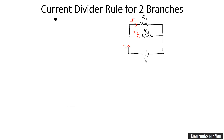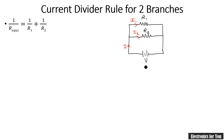Let us talk about the current divider rule for two branches. Here is the circuit: this is R1, this is R2, and the currents flowing through them are I1 and I2 respectively. The total current is again considered as I and supply voltage is V. In this case R-equivalent can be calculated using the same formula: 1 upon R-equivalent equals 1 upon R1 plus 1 upon R2.